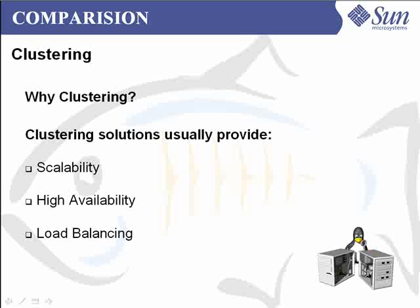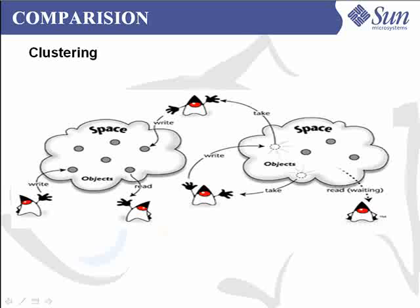Clustering solutions usually provide scalability, high availability, and load balancing. Clustering has been supported in GlassFish since September 2007 and will be further improved. Clustering is used for horizontal scalability and high availability, and interest in the feature is increasing quickly with GlassFish deployments. Tomcat has a simple clustering solution and is a popular open source implementation of the servlet API using JavaSpace technology.